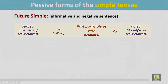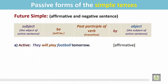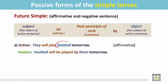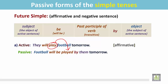See the examples. 'They will play football tomorrow.' This is the subject; the be verb is in the future form; the transitive verb is 'play' and the object for this verb is 'football.' This is an affirmative sentence. Passive form: the object becomes the subject — here 'football.' The be verb 'will be' is in the future simple form; the transitive verb 'play' becomes 'played' (the past participle form); then the preposition 'by' and the object — the subject of the active sentence.